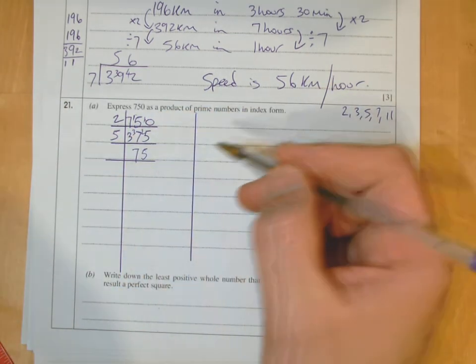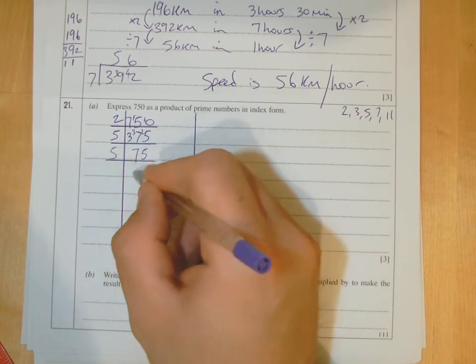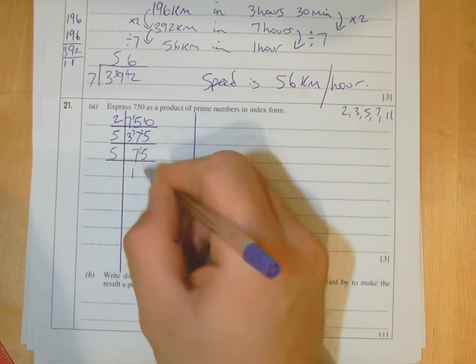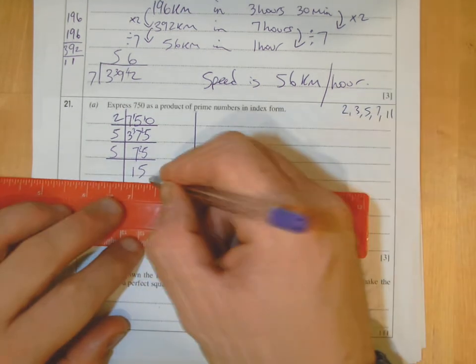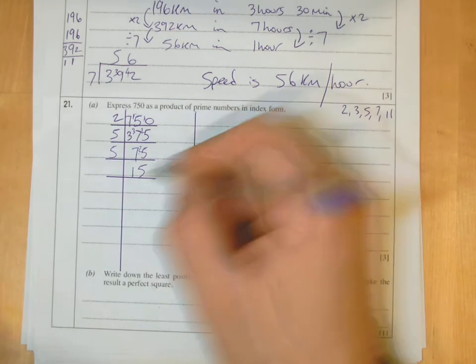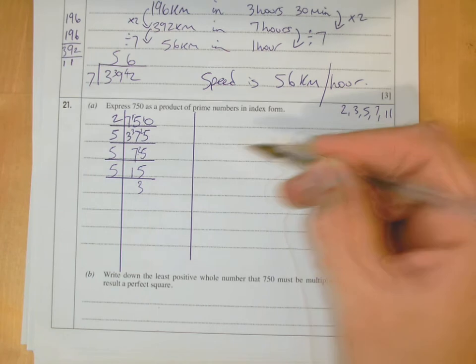75, again I'm thinking what goes into 75. Well, 5 goes into it. 5 goes into 7 once with remainder 2, and then 5 into 25 goes 5 times. You've got 15. Now I'm thinking, what goes into 15? 5 again. 5 into 15 goes 3 times.